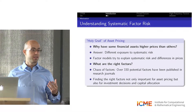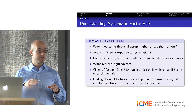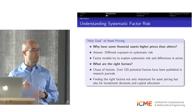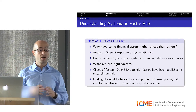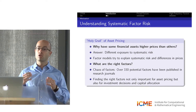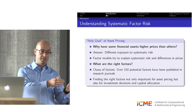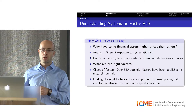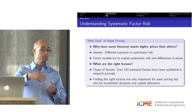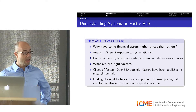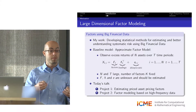The holy grail question of finance is: what are the right factors? There are decades of research on this question, and in the last decade around 330 factors have been proposed and published in academic journals. But it's fair to say that we still don't know. It's also important when making decisions about investment or capital allocation, because investment decision models are directly based on asset pricing models.